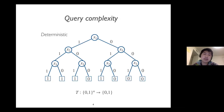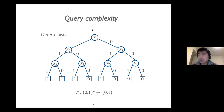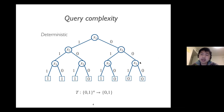In the classical setting, a query algorithm is simply a decision tree. In this example, we can first query the variable x1, and depending on its value, we query either x2 or x3. We repeat this procedure until we reach the leaf of this tree, and the label on the tree should be the output of this function.